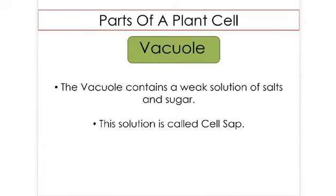The vacuole takes up a large area of the cell and contains cell sap. Pause the video and copy the information.